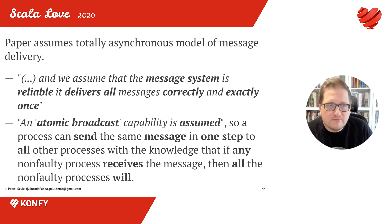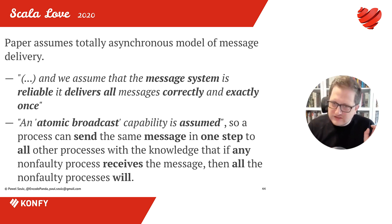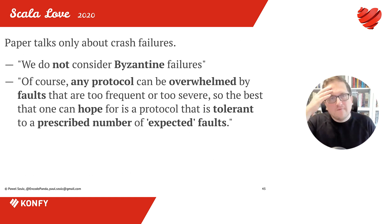The message system is thought of as reliable — that means if a message is sent, it will be delivered correctly and exactly once. Also, atomic broadcast is assumed: if a process sends one message to a bunch of other processes, and at least one non-faulty process receives that message, all of them will. So even with those assumptions about the message system, in that particular model where processes may fail, consensus cannot be reached.